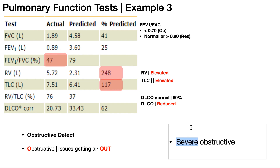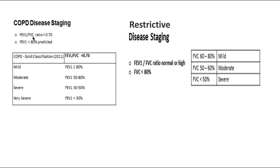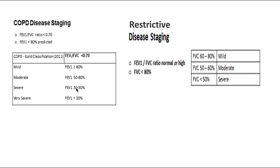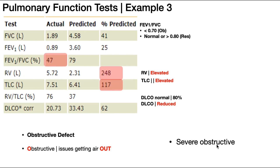For stratification of obstructive disease, we look at the FEV1 to FVC ratio. Our ratio is 47%, or 0.47, which falls between 30% and 50% — so this again is a severe case: severe obstructive disease. We can also look at the DLCO value. Generally in COPD and emphysema, the DLCO is reduced because gas exchange is impaired. Here at 62%, it is well below 80%, confirming gas exchange is impaired.